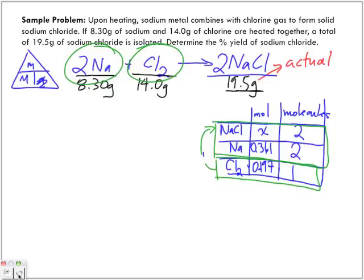What we're going to do is, remember when we're using this chart — we separate the moles to molecules and treat it as a set of ratios, treating that as if it's an equal sign. So what we're going to do is find out sodium to sodium chloride, to find out how many moles of sodium chloride are going to form using the number of moles of sodium.